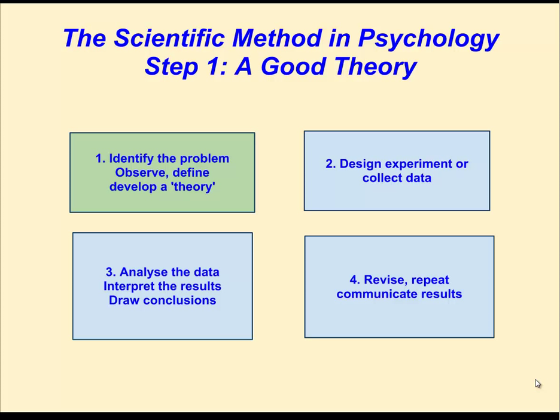You know that the scientific method has four important steps. Number one: identify the problem or define the question of what you're going to be investigating, and we do this by developing a theory — sometimes we call it a working hypothesis. Number two: we're going to start collecting data, perhaps by experimentation or by any of the methods that psychologists use to collect data, which will be covered in the next lesson.